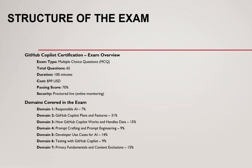Now let's understand the structure of the exam and what you can expect. The exam is MCQ type — you will get 65 multiple choice questions. The GitHub Copilot exam is divided into seven distinct domains. It's not just about coding; the exam also covers administrative, governance, and operational aspects. You will receive questions from all domains, so be sure to prepare for each area thoroughly.